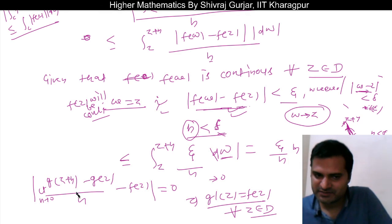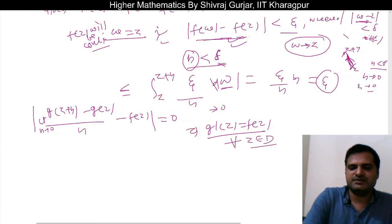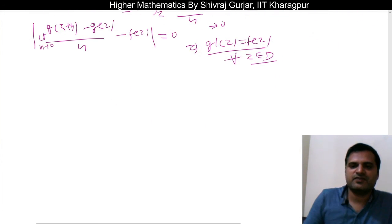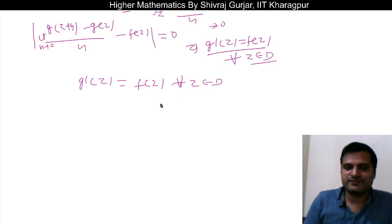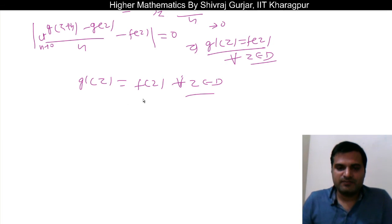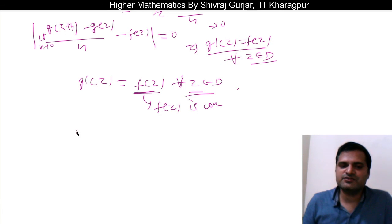This holds for every z belonging to D, because we took an arbitrary z. From this, we establish that g'(z) = f(z) for every z belonging to D. Further, it is given that f(z) is continuous for every z in D. Since f(z) is continuous and g'(z) = f(z), g'(z) is also continuous, which means g(z) is analytic at every arbitrary point z.